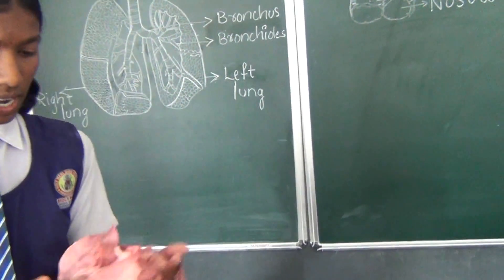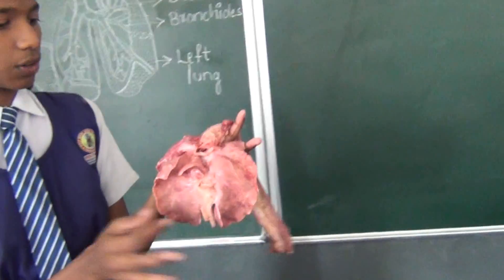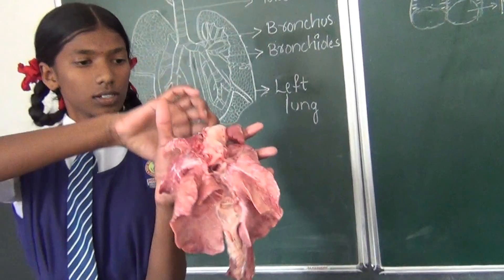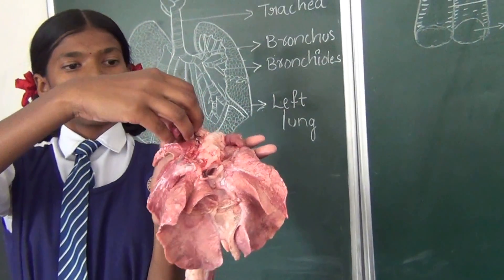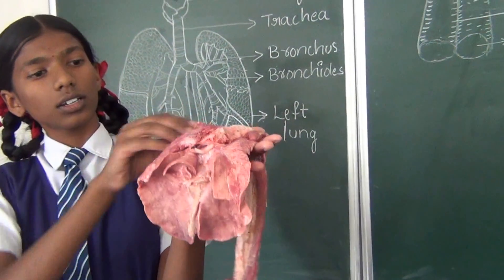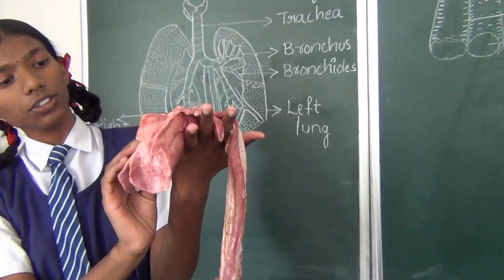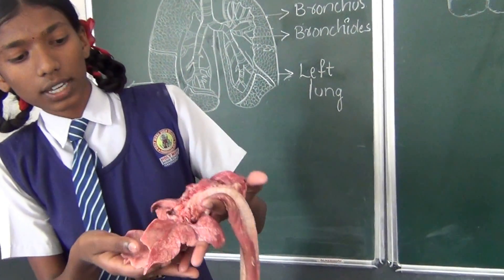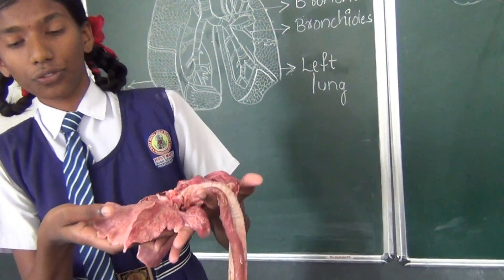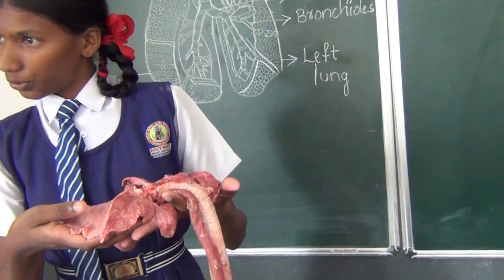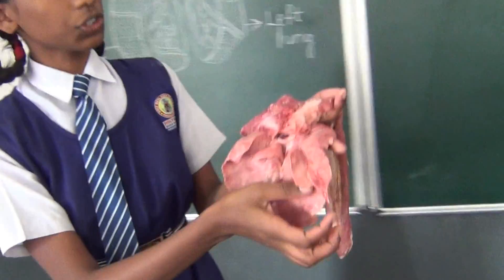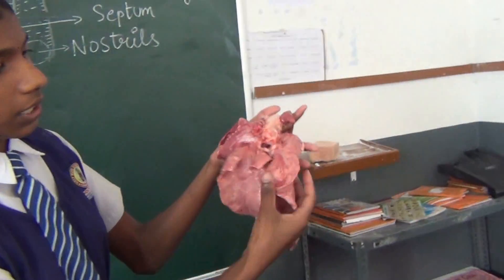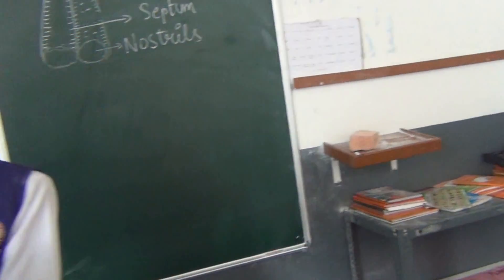The right lung is made of three lobes — one, two, and three. While the left lung is made of two lobes. Everyone can see three lobes here? Yes. And here, two lobes.